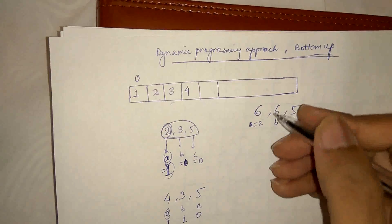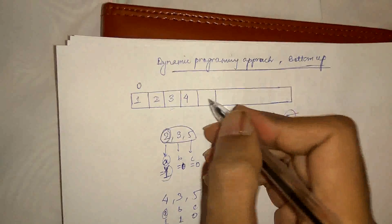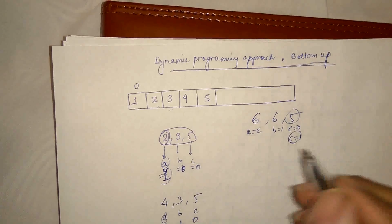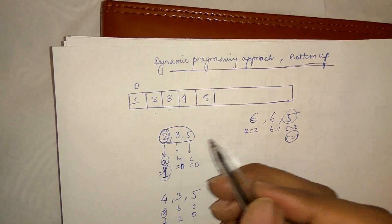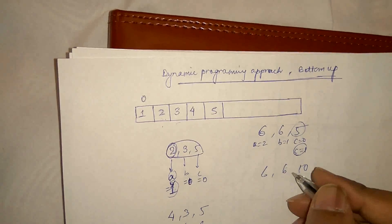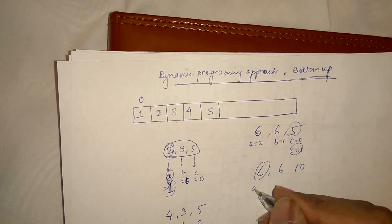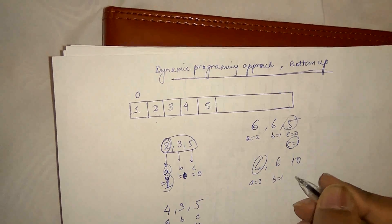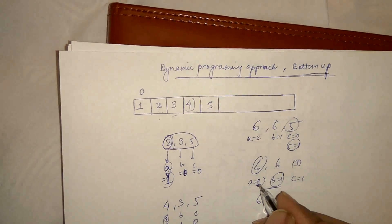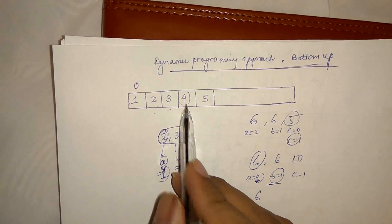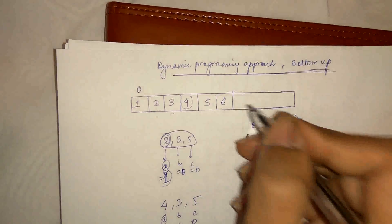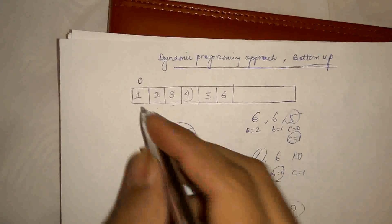Continuing: c equals 1, so 5 × ugly[1] = 10. Now candidates are 6, 6, and 10. The minimum is 6 — we pick either (both are 6) and increment both a and b. For a equals 3, we get 2 × ugly[3] = 8. Then candidates are 8, 6, and 10; minimum is 6 again. In this fashion we fill all positions to calculate the 100th ugliest number. The time complexity is O(n), where n is the user input.